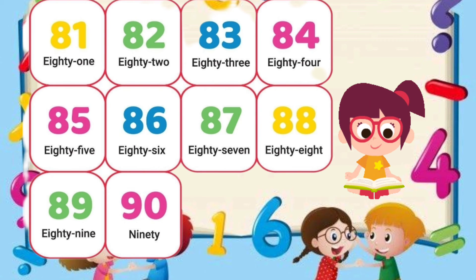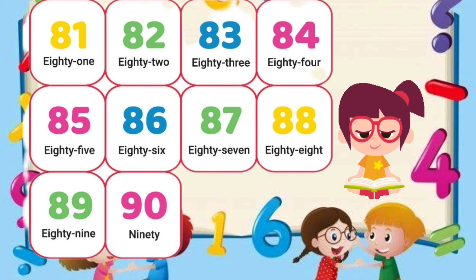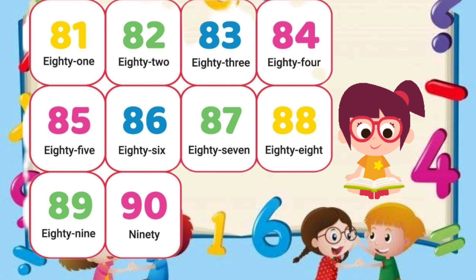81 — E-I-G-H-T-Y O-N-E. 81. 82 — E-I-G-H-T-Y T-W-O. 82. 83 — E-I-G-H-T-Y T-H-R-E-E. 83. 84 — E-I-G-H-T-Y F-O-U-R. 84. 85 — E-I-G-H-T-Y F-I-V-E. 85.